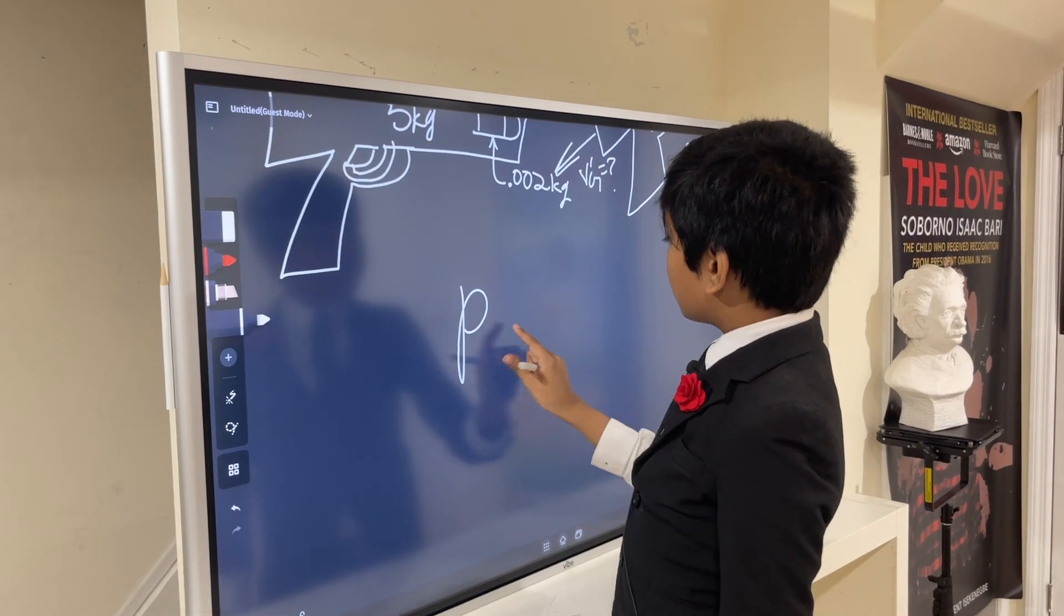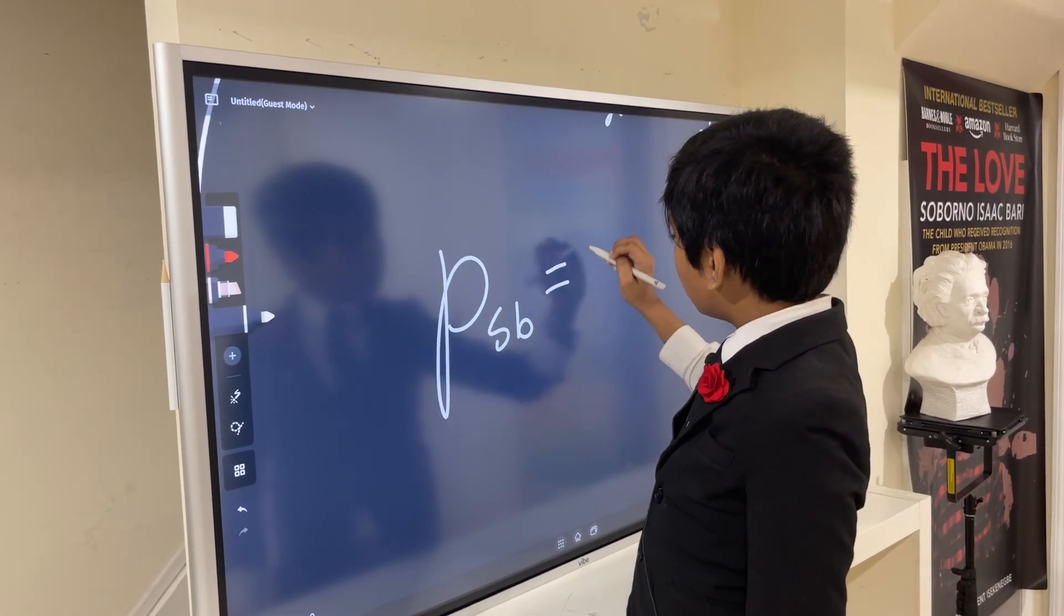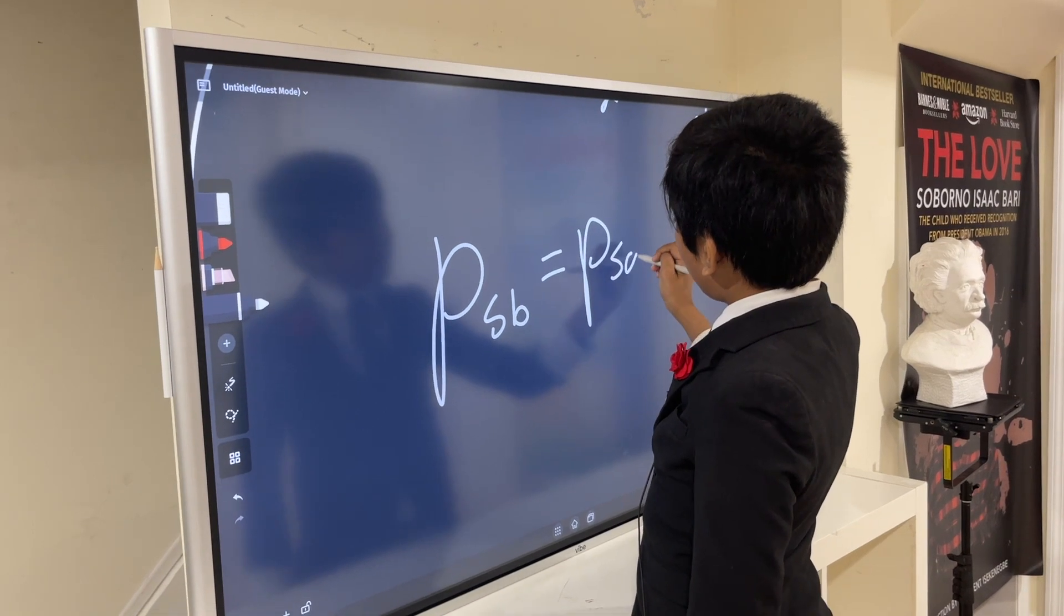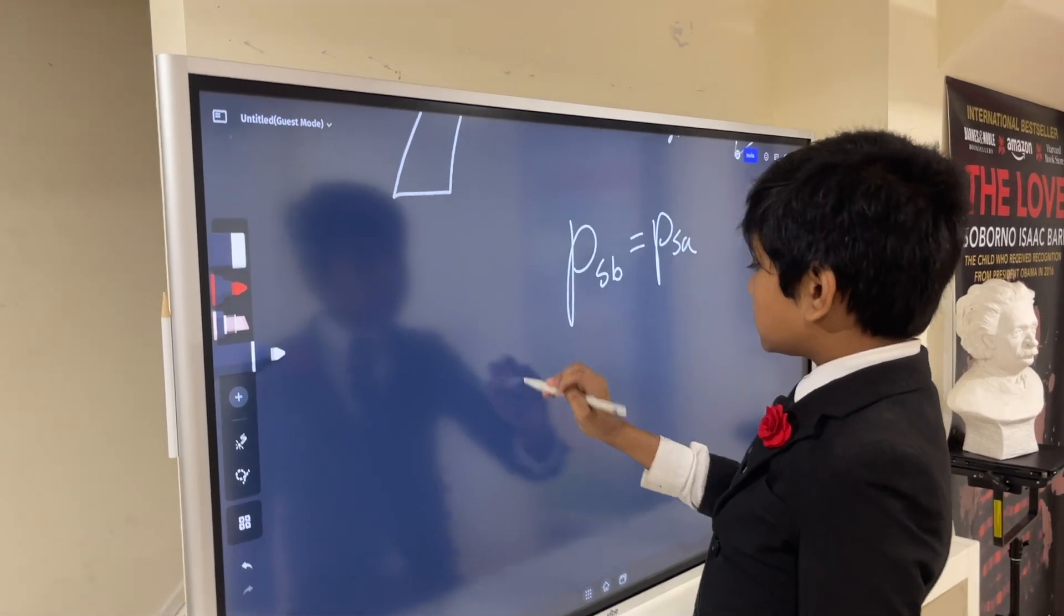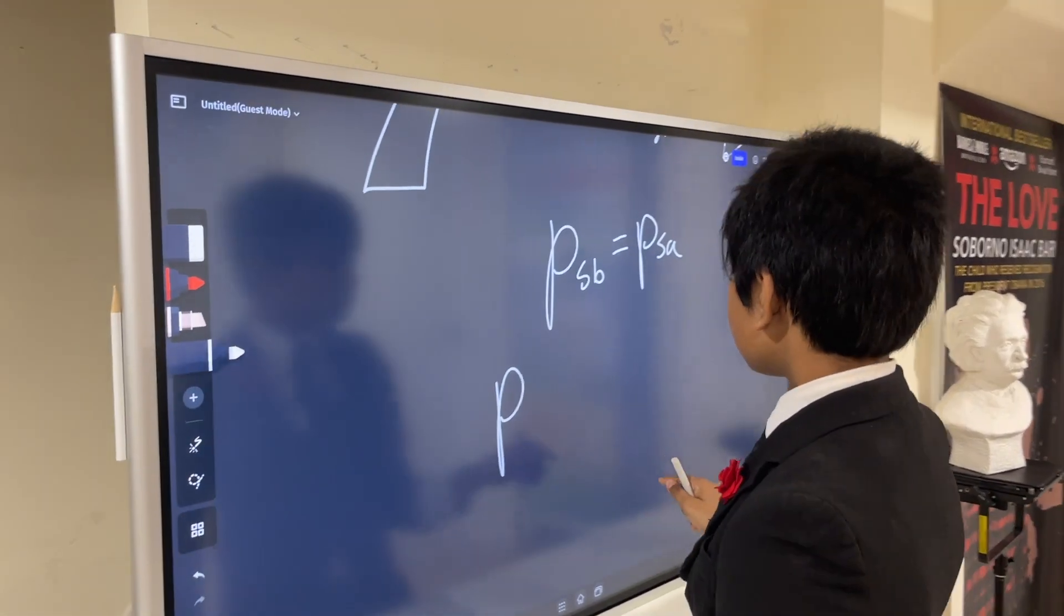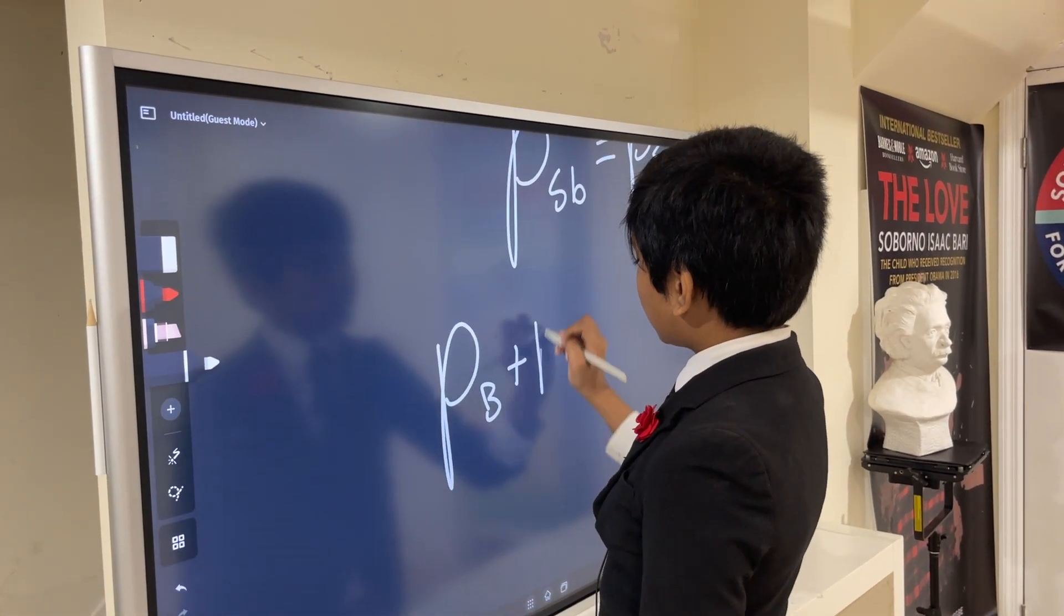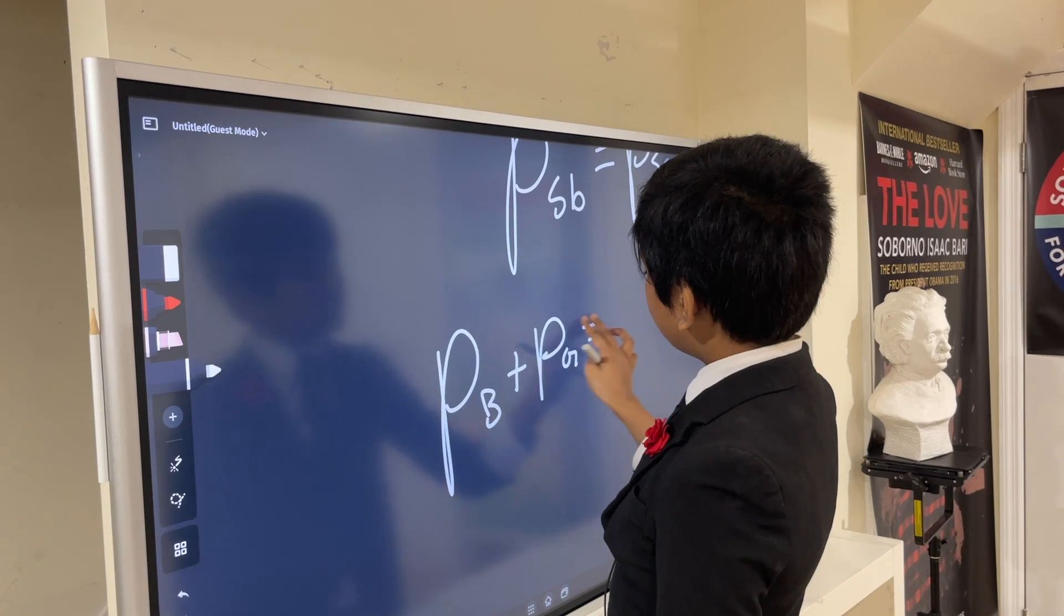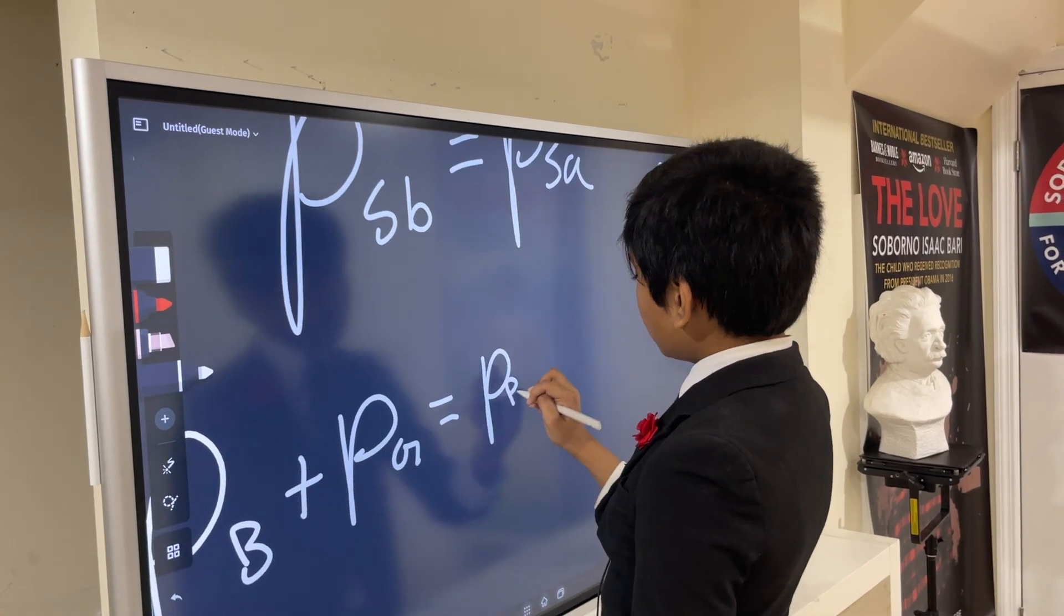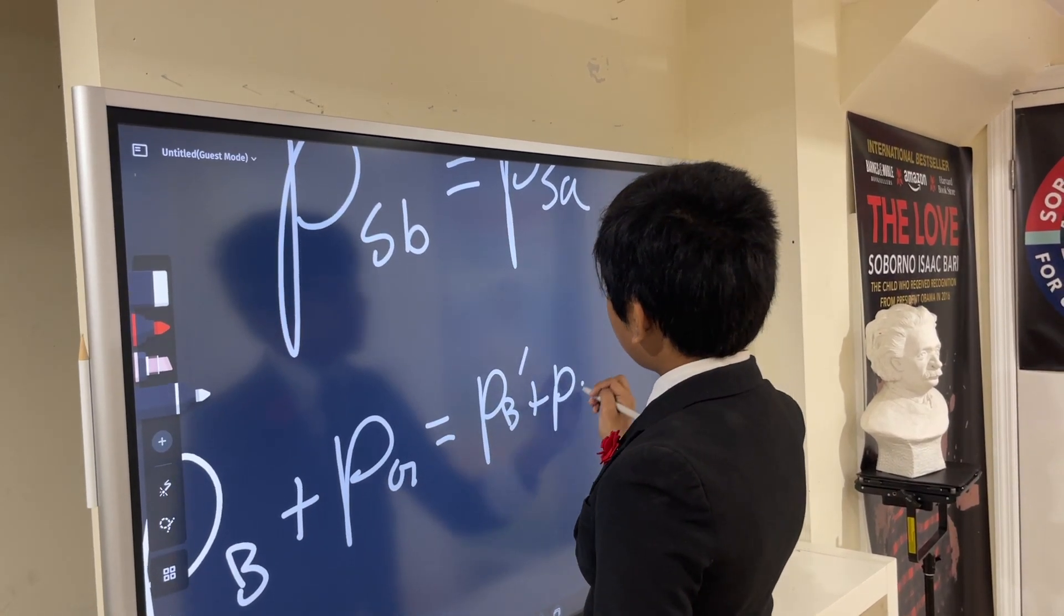So, the momentum of the system before in total is equal to the momentum of the system after in total. That's the momentum of the bullet plus the momentum of the gun before is equal to the momentum of the bullet after plus the momentum of the gun after.